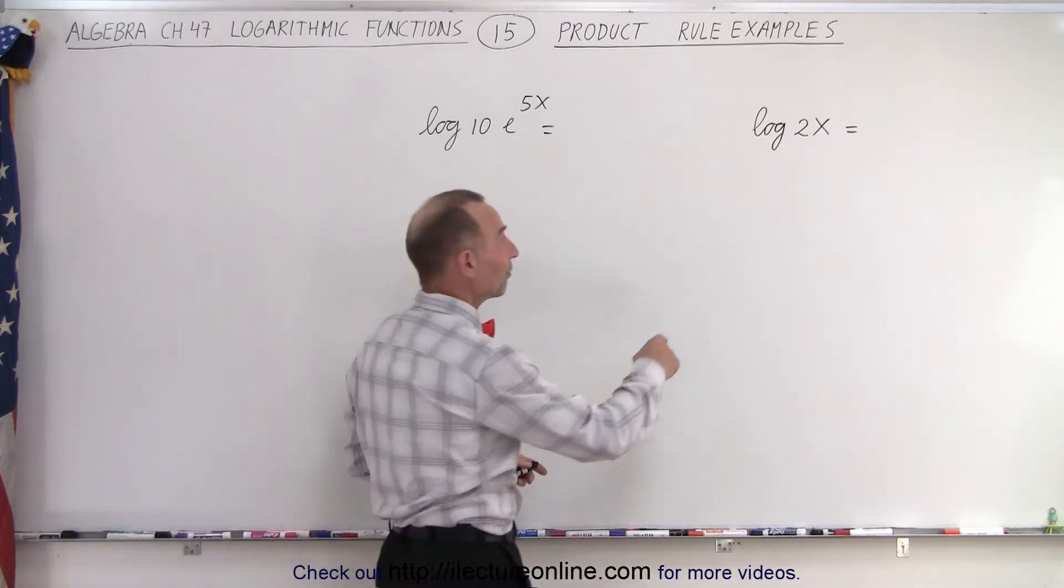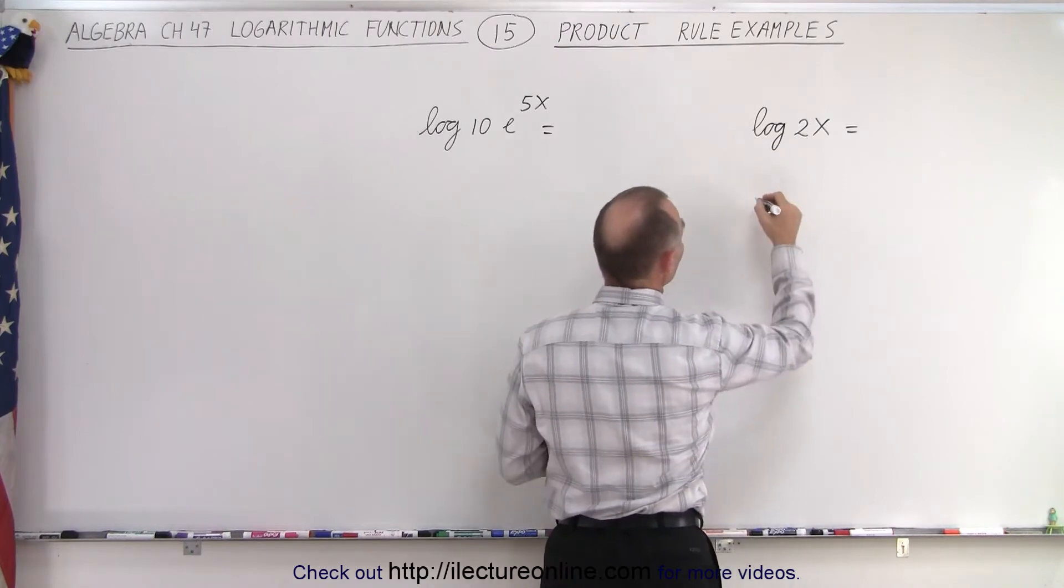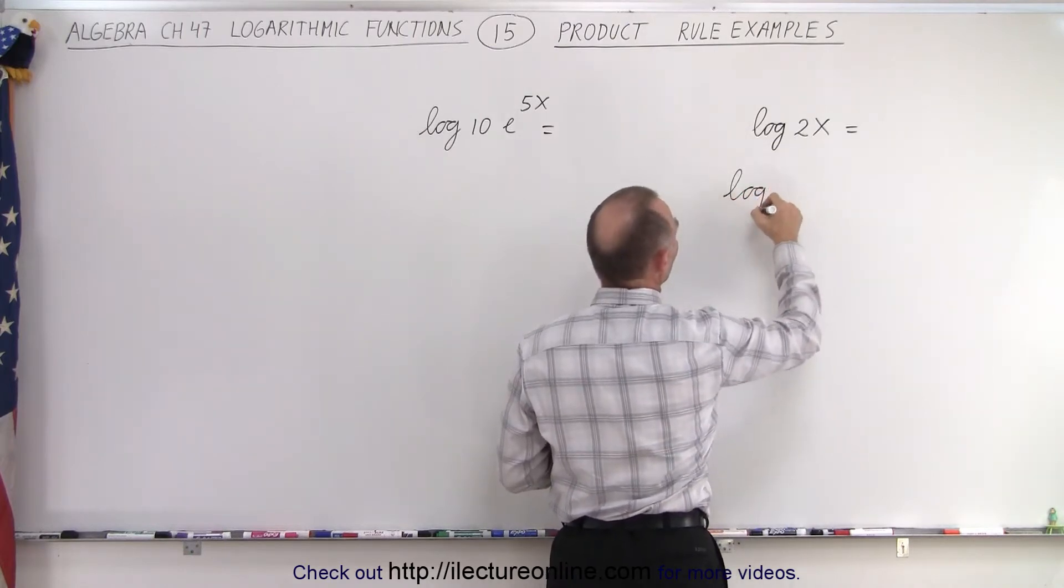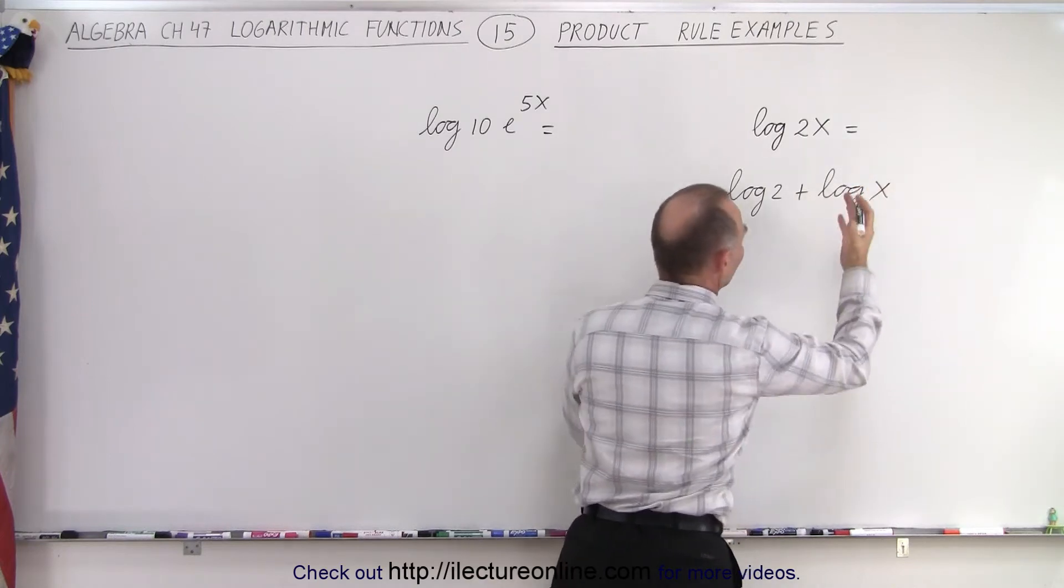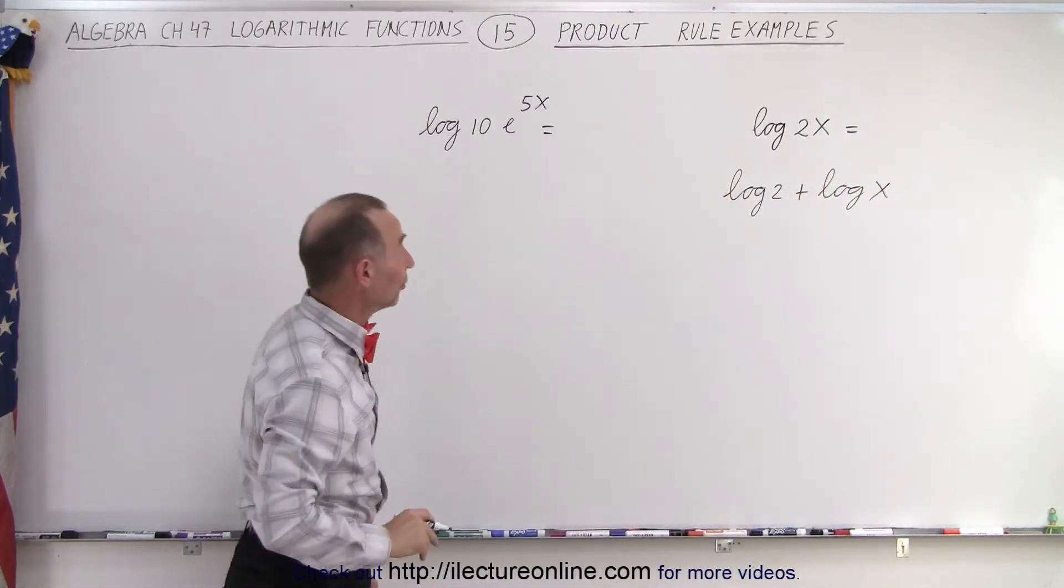Well we have the log of a product, 2 times x, so this can be written as a sum: the log of 2 plus the log of x. It's as simple as that. It's a really handy rule.